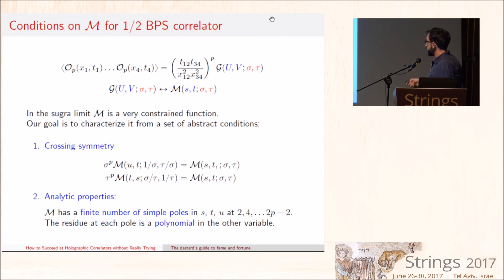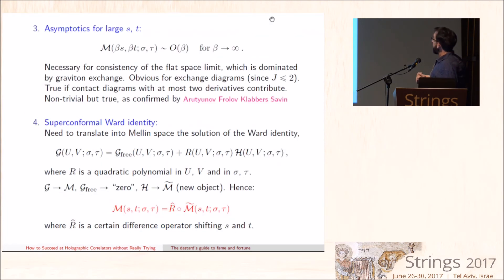Some are obvious. Obviously, crossing symmetry is a certain symmetry when we exchange S and T and σ and τ. The analytic properties are also obvious. At large N and large λ, we only have protected operators, so we only have a finite number of simple poles, which are the single trace operators which are exchanged, and their residues are polynomial. We also have a strong opinion about the asymptotic behavior for large S and T, which follows from consistency with the flat space limit, and this actually took a little bit of back and forth with these authors. They were in disbelief at the beginning, but they confirmed that this is indeed the case as it must be for the flat space limit to be consistent.